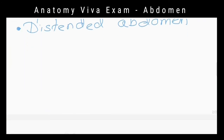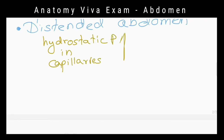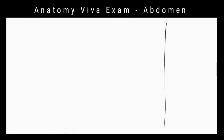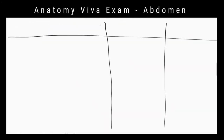Why is the abdomen distended? Because increased hydrostatic pressure in capillaries leads to accumulation of serous fluid in the peritoneal cavity.